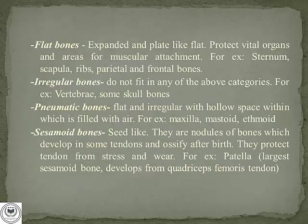Flat bones are expanded and flat like a plate. They protect vital organs and provide areas for muscular attachment. Examples include the sternum, scapula, ribs, and the parietal and frontal bones. When you look at the structure, these bones are very thin and plate-like, and they are mostly useful for the attachment of different types of muscles.